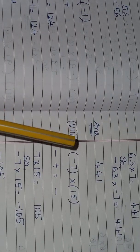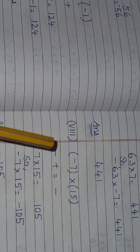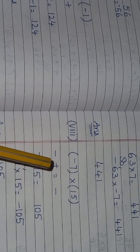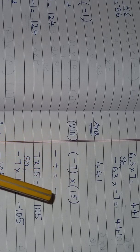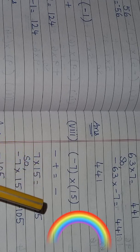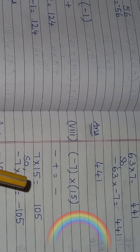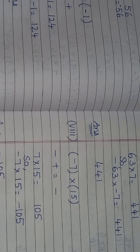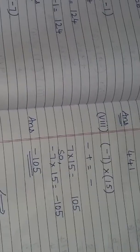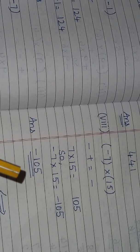Now the last question of Practice Set 8: minus 7 multiply 15. Minus multiply plus will become minus. 7 multiply 15 is equal to 105. So minus 7 multiply 15 is equal to minus 105. Now next exercise — I am going to give Practice Set 9 in this video only, so keep watching.